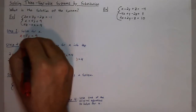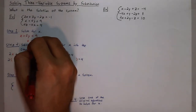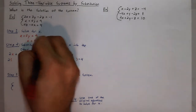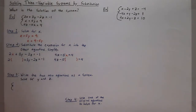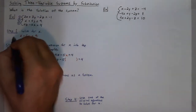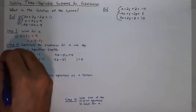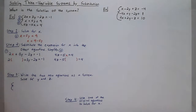By subtracting 5y, I can find out that x is equal to 9 minus 5y. I can use that to substitute into the other two equations. If I were to label these 1, 2, and 3, I used the second equation, so I must substitute into the first and third equations for this next step.